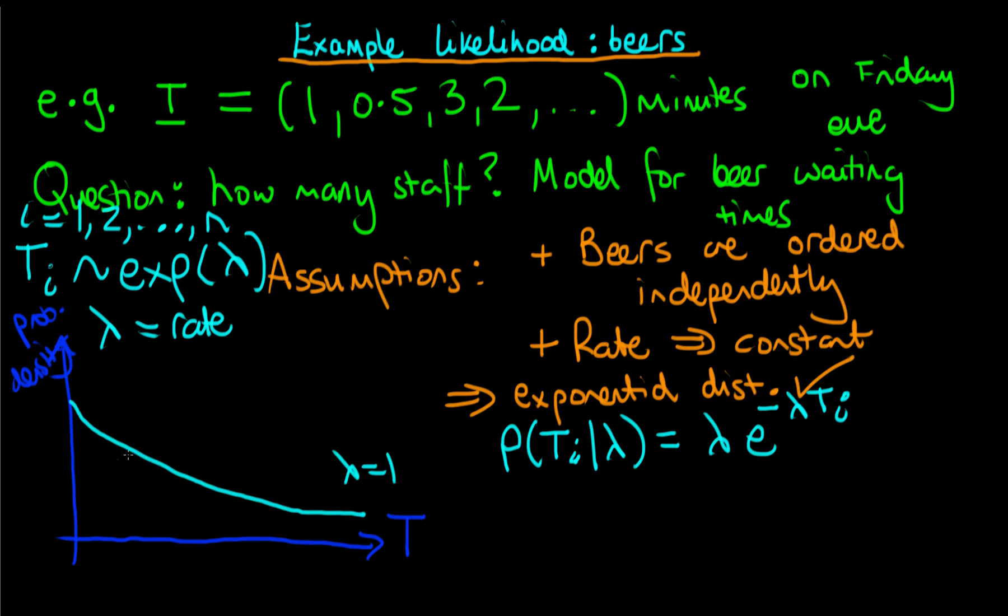Then if we were to increase the rate at which beers are ordered, then what we would find is that the distribution would shift to the left. So for lambda equals 2, we might get a distribution something like this mauve line which I'm drawing here.